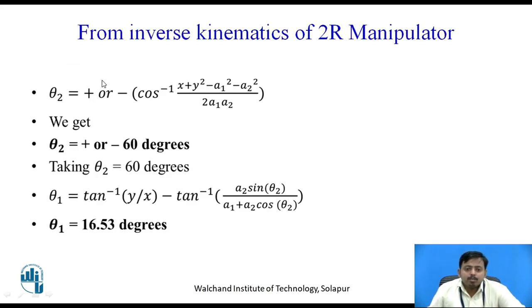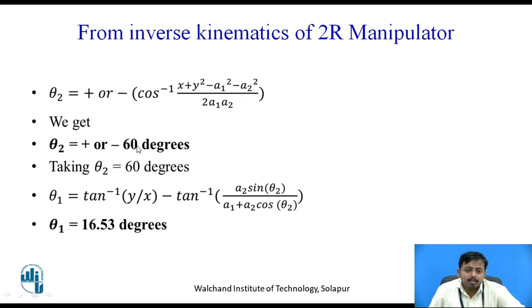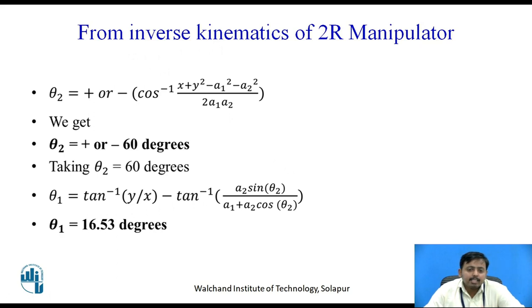From the inverse kinematics of a 2R manipulator, theta-2 = ± cos⁻¹[(x² + y² - a1² - a2²) / (2*a1*a2)]. Substituting the values gives theta-2 = ±60°. Taking the positive orientation, theta-2 = +60°, we calculate theta-1 = 16.53° using the inverse kinematics formula. This completes the joint angle calculation.